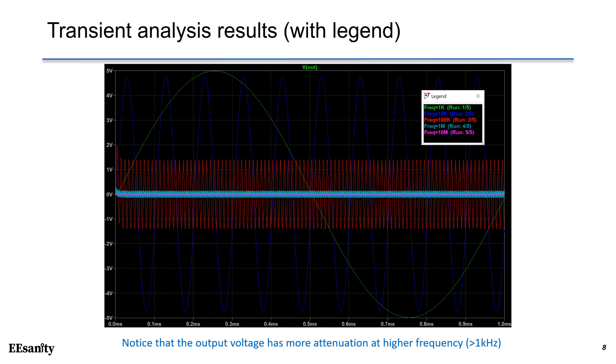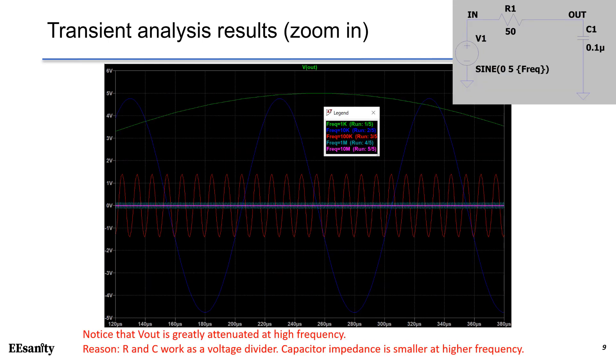Once frequency goes up, for example at 10 kHz, the magnitude begins to reduce, and output voltage has more attenuation at higher frequency. Let's zoom in in the LTspice results. At 1 MHz and 10 MHz, the output voltage is greatly attenuated.